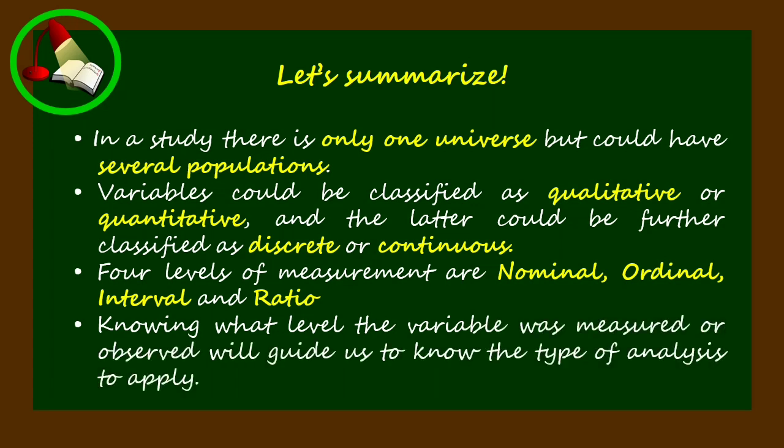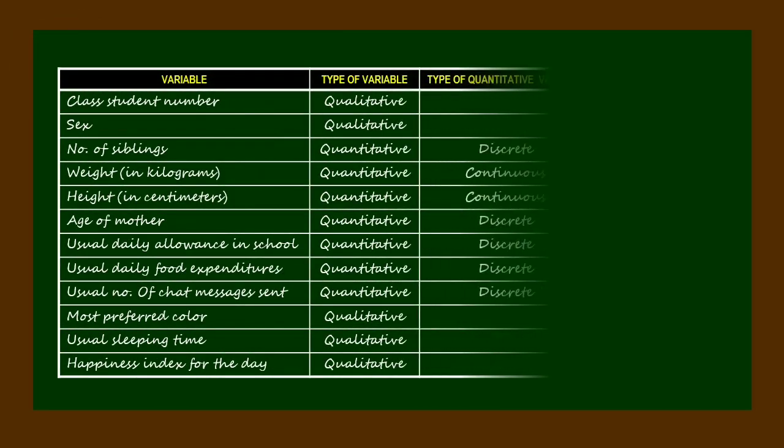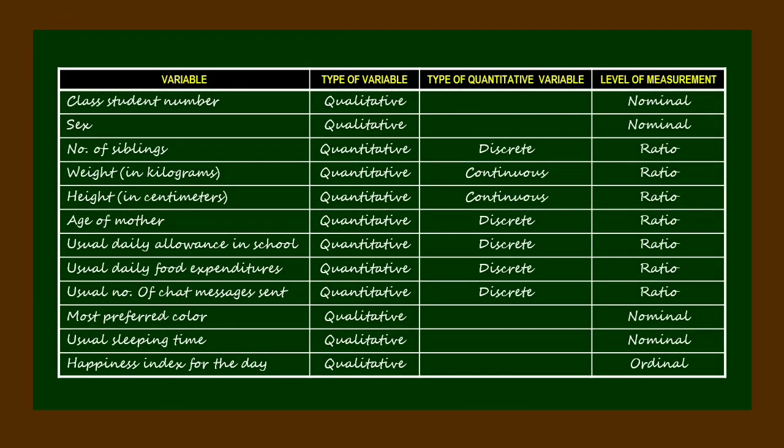Given the 12 variables we gathered previously in our data collection activity, let us categorize each of them as to the type of variable—whether qualitative or quantitative—and likewise classify each of them as to discrete or continuous. Let us also determine the levels of measurement of each of the given variables.